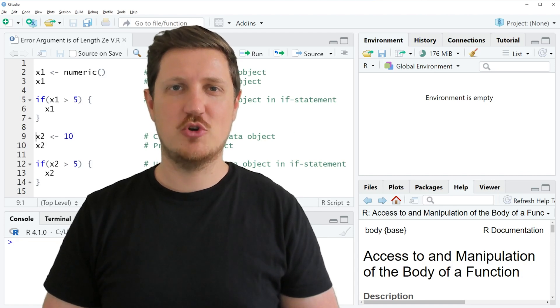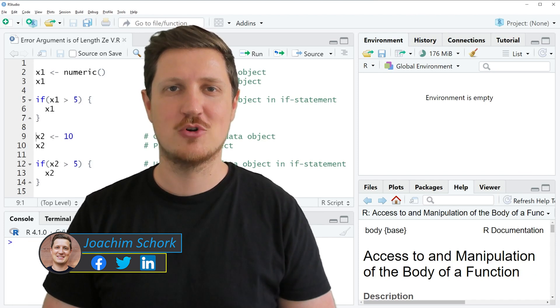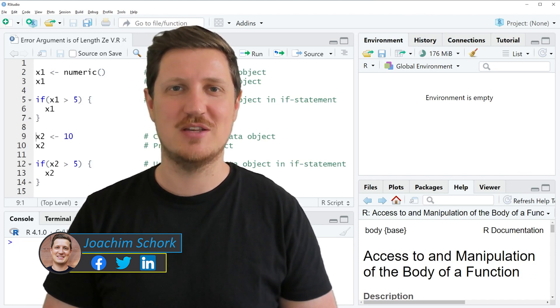This video explains how to reproduce and fix the error message 'argument is of length zero' in the R programming language. So without too much talk, let's dive into the R code.